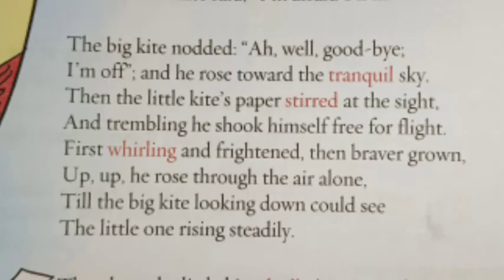Let's read the second stanza. 'The big kite nodded. Ah well, goodbye, I am off,' as he rose towards the tranquil sky. Then the little kite's paper stirred at the sight, and trembling, he shook himself free for flight. First whirling and frightened, then braver grown, up, up he rose through the air alone.